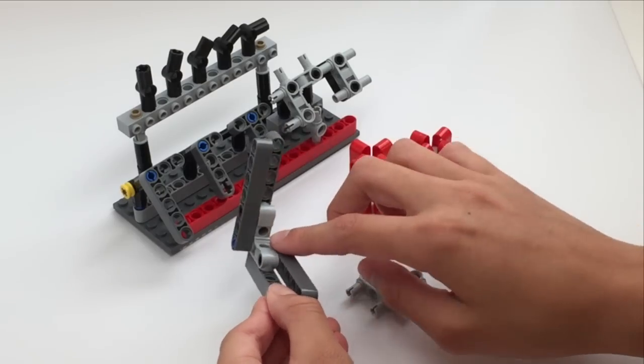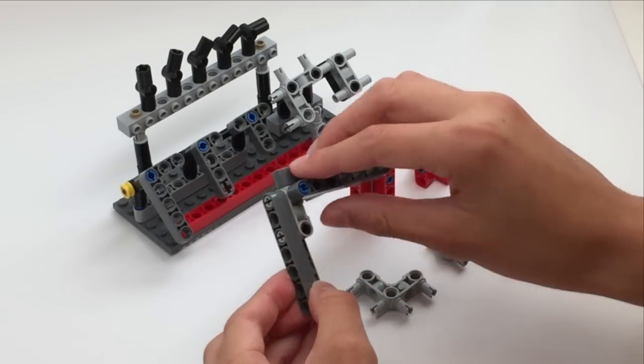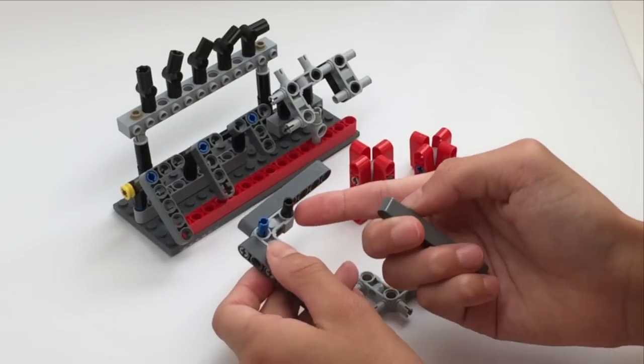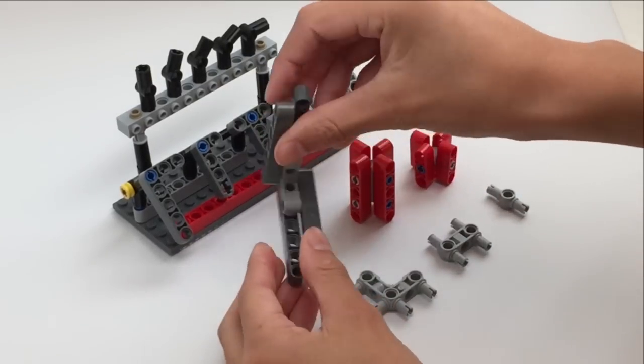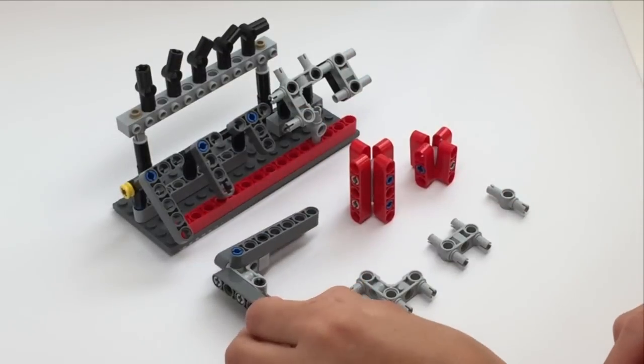You've got holes here and holes along the sides. All you have to do is put in these black pegs or these long blue pegs to be able to build on the sides and on the top.